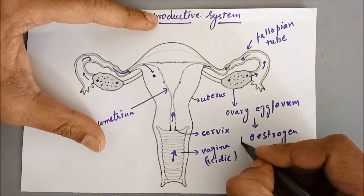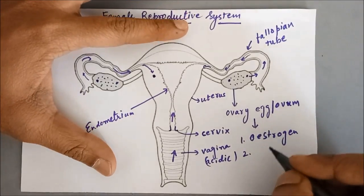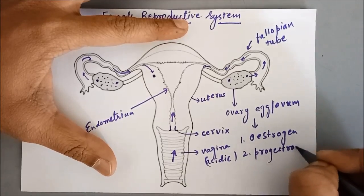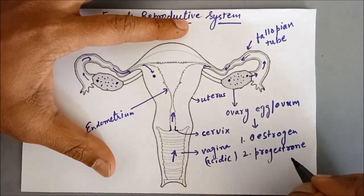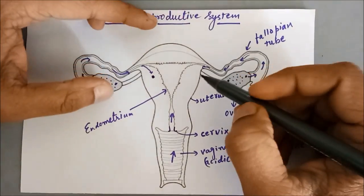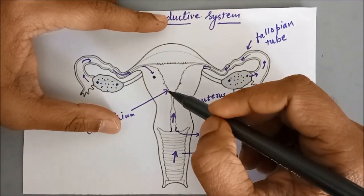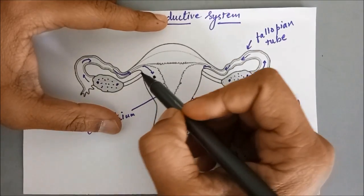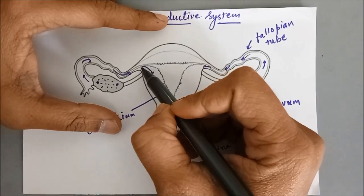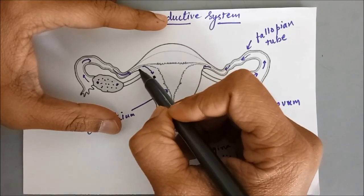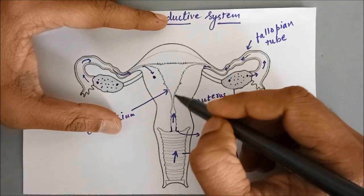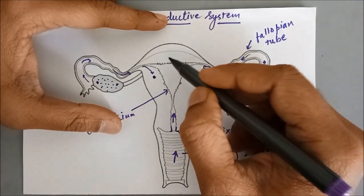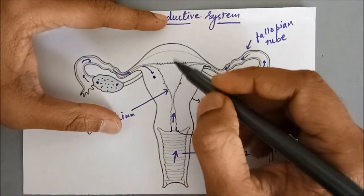And then there is another hormone called progesterone. Progesterone has a very vital role during pregnancy. During fertilization, which takes place near the end of the fallopian tube, the progesterone hormone is released and it prepares the uterus for pregnancy.